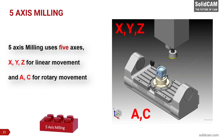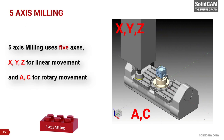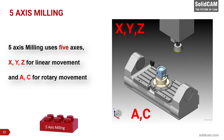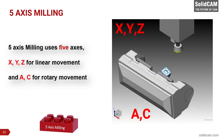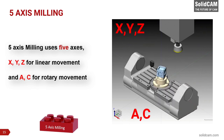5-axis milling uses 3 linear axes — X, Y, and Z — and 2 rotary axes designated as A and C, A and B, or B and C. The two additional rotary axes allow the cutting tool to access multiple sides of the workpiece in a single setup. Without the need to unclamp, manually rotate, and reclamp the workpiece, much greater efficiency and improved workpiece accuracy can be achieved.